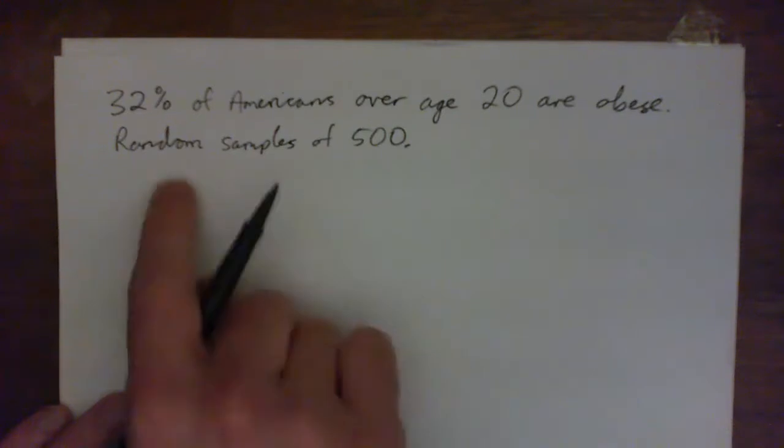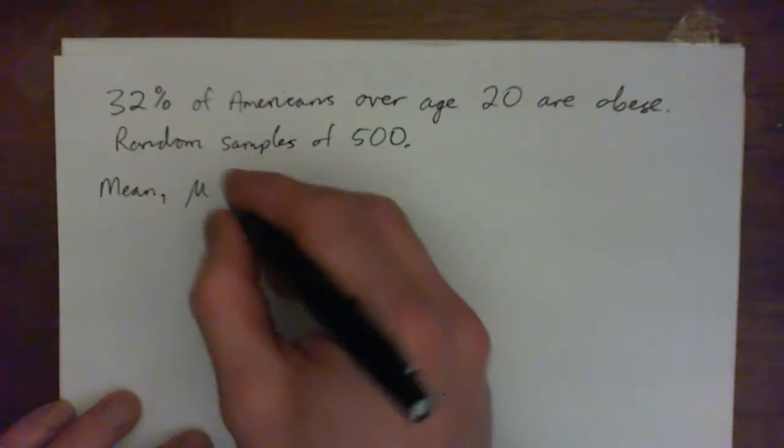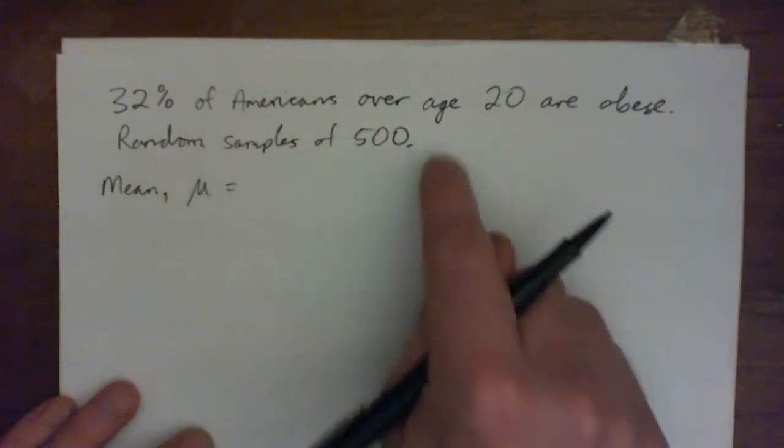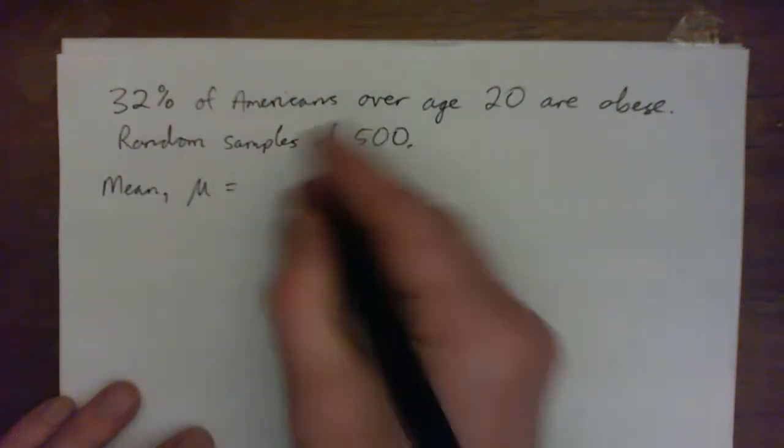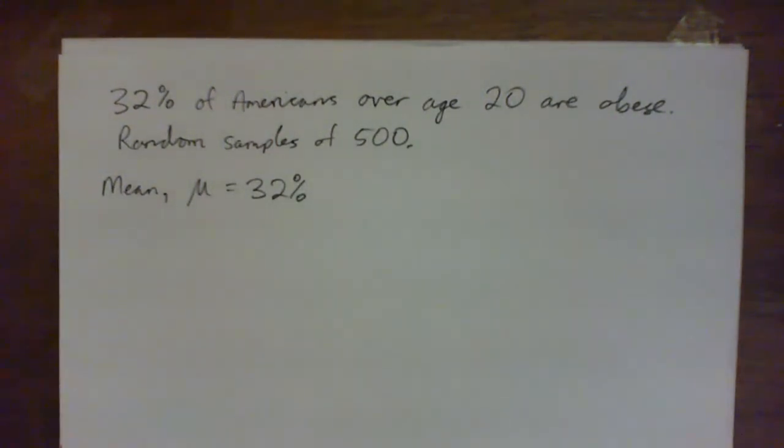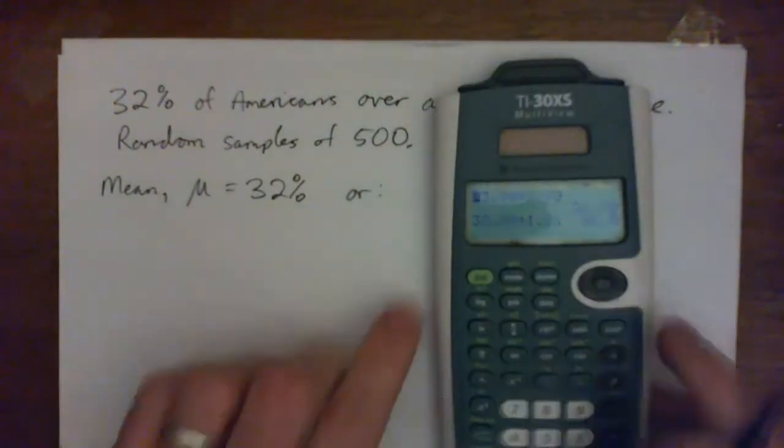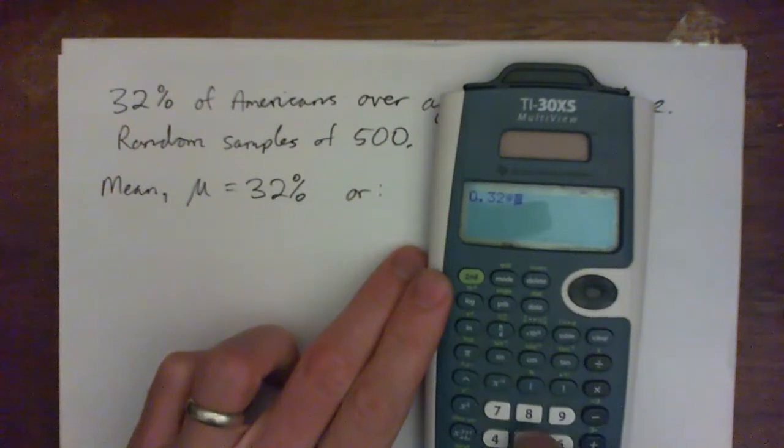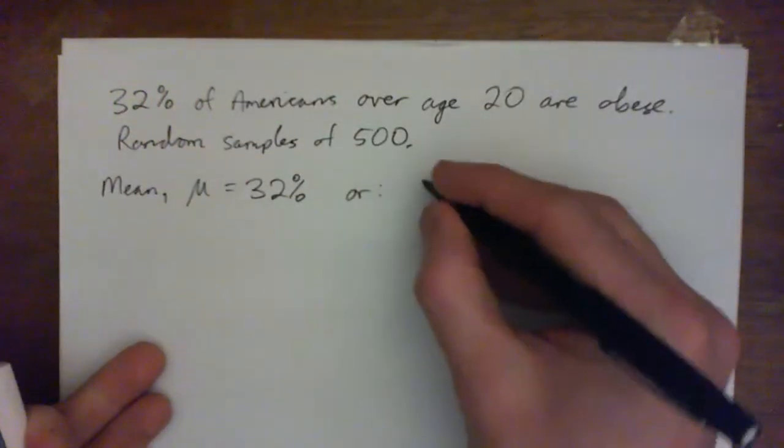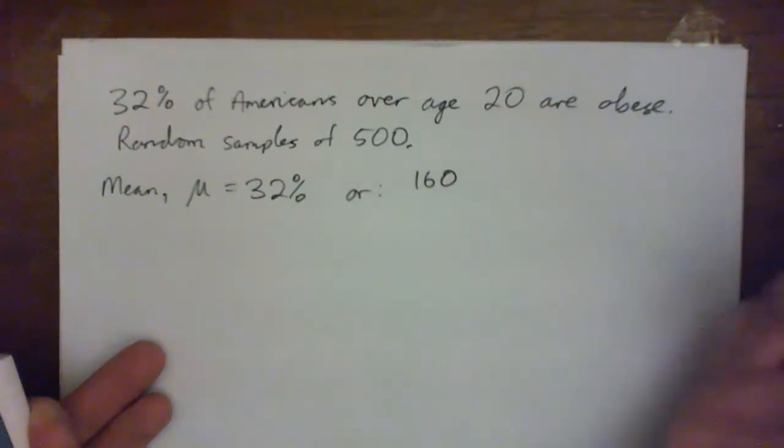We're going to find the mean and standard deviation of this normal distribution, and we're going to round the standard deviation to one decimal place. So the first thing to know is that we expect that the mean, designated with this Greek symbol mu, for the population is 32%, and we expect that to hold for sample sizes of 500.